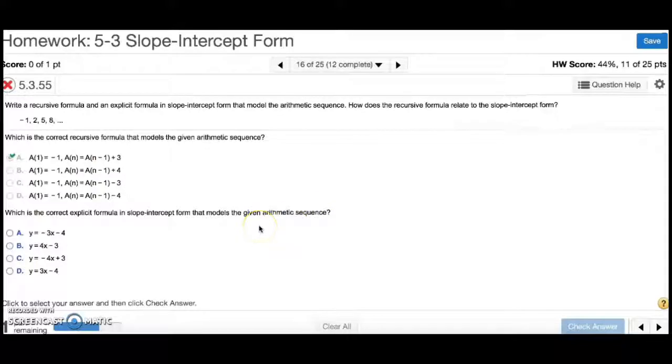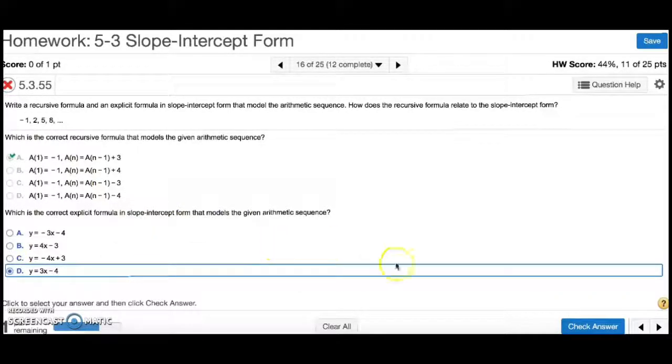Now, which one would be it in slope-intercept form? If I'm adding 3, it means the rate of change is 3, and I'm multiplying by 3. And positive 3, so that means it would be D.